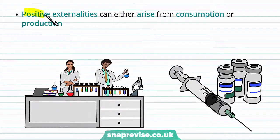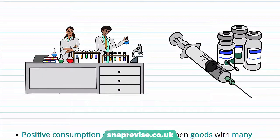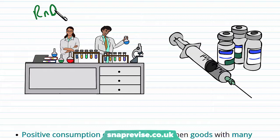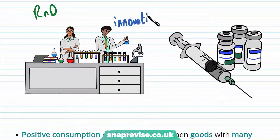Positive externalities can arise from either consumption or production. Thinking about production, research and development is a key example. Many firms participate in R&D, which leads to innovation, and more innovation means more invention in society — a benefit for all. If one firm achieves a technological advancement, that's going to positively impact other economic agents as well.